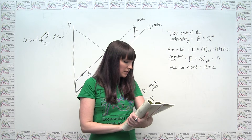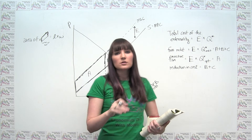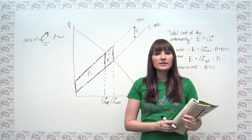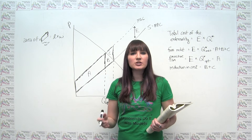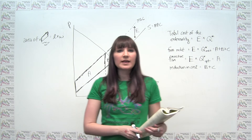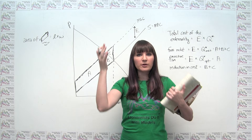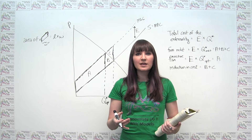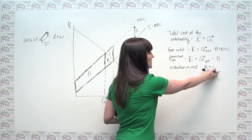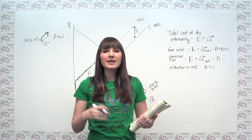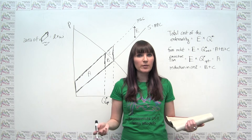The statement says these benefits have to be weighed against the deadweight losses that the taxes cause. It's not the case that the deadweight loss magically goes away. What's actually happening when we put a corrective tax in place and say we're raising social welfare is that the reduction in externality cost outweighs the deadweight loss to consumers and producers created by the tax.